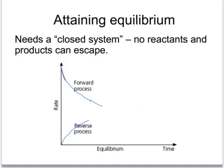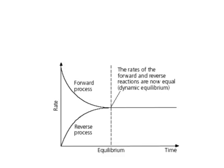Eventually, the forward process producing ammonia and the backward process breaking up the ammonia will meet in the middle, and we'll have an equal rate for each. At this point, we've attained equilibrium. As the reaction proceeds, the forward process slows down and the reverse process speeds up until both reach the same rate — at that point we've reached equilibrium. That doesn't mean the reactions have stopped; the forward reaction and the backward reaction are still going on, but their rates are entirely the same, so we don't get any change in the concentration of the products and reactants.